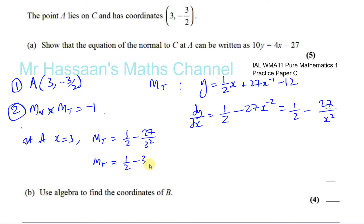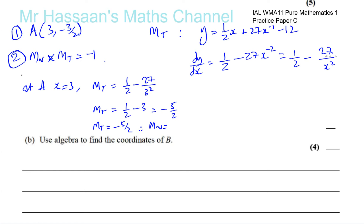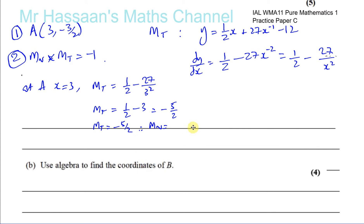So one-half minus 3 is like 1/2 minus 6/2, which equals minus 5/2. The gradient of the tangent is minus 5/2. Therefore, the gradient of the normal is the negative reciprocal: if you multiply them you get minus 1, so the gradient of the normal is 2/5.